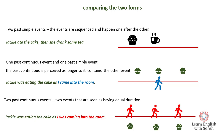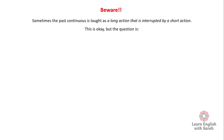We can also have two past continuous events, and in this situation the two events are seen as having equal duration: 'Jackie was eating the cake as I was coming into the room.' Now, you might come across in grammar books or on the internet the idea that the past continuous is a long action interrupted by a short action — for example: 'Alex was having a bath when the phone rang.' This is okay, but the question is: who chooses which event is long or short?